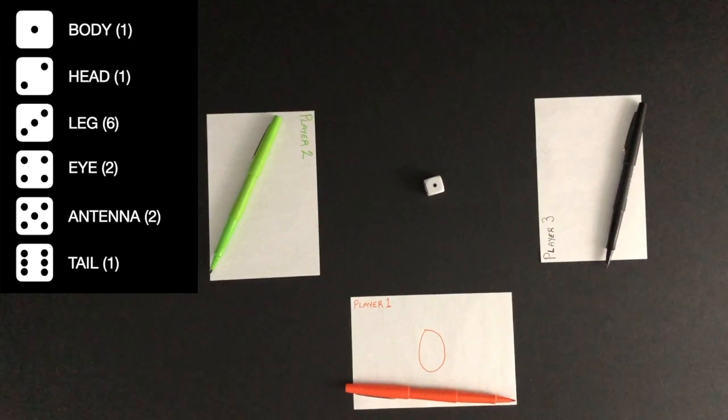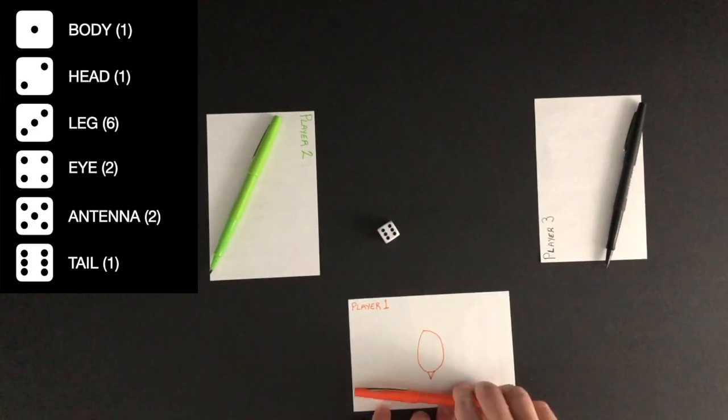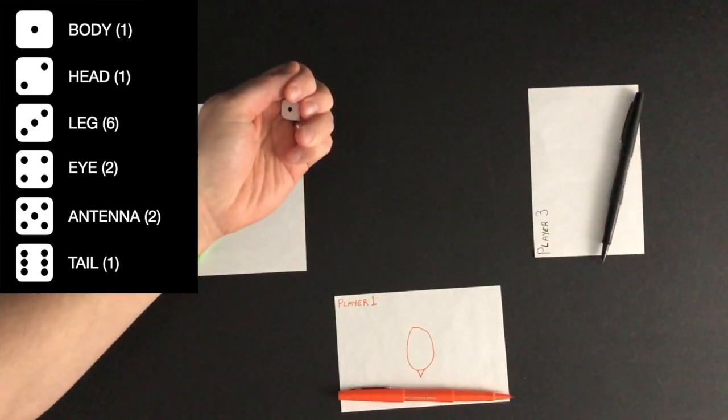Play moves left to player 2. Player 2 doesn't roll a 1 and cannot draw this turn. Play moves to player 3. Player 3 doesn't roll a 1 and cannot draw this turn. Play returns to player 1 who rolls a 6. Player 1 is able to draw the tail. Play moves to player 2. Player 2 rolls a 1 and draws the body.